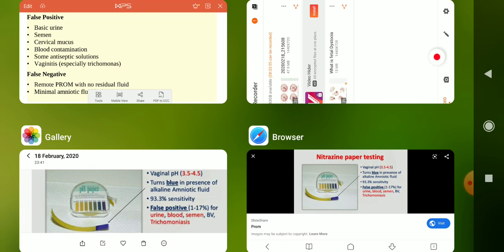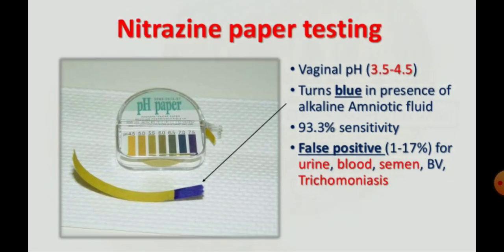The nitrazine paper test shows vaginal pH is normally 3.5 to 4.5. After taking a sample from vaginal secretion and placing it on the nitrazine paper, the paper turns blue due to the higher pH or basic nature of the amniotic fluid. The test has a sensitivity of 93.3%, with a false positive rate of 1 to 17 percent for urine, blood, semen, and trichomoniasis.